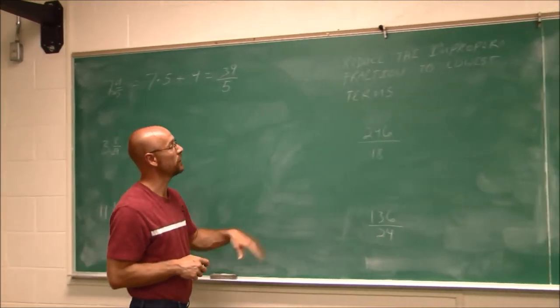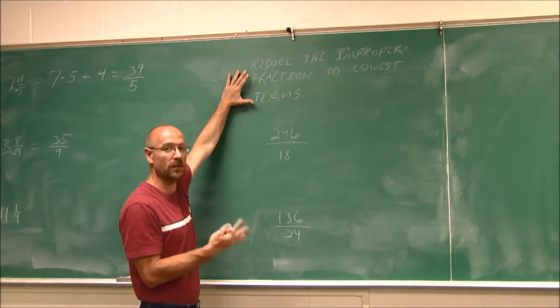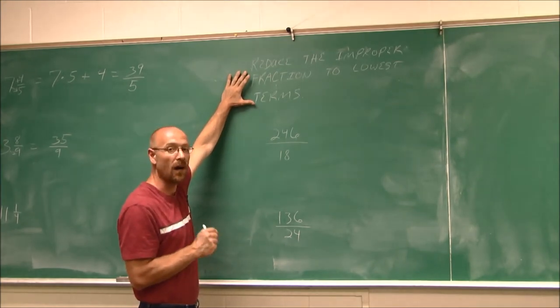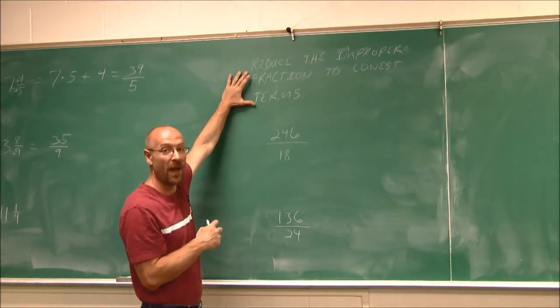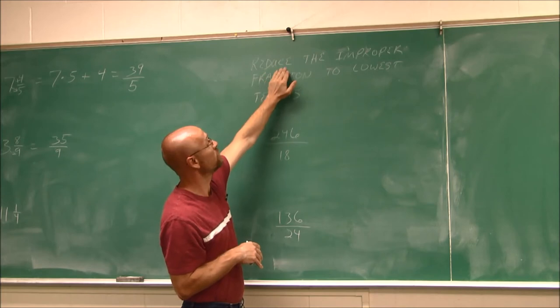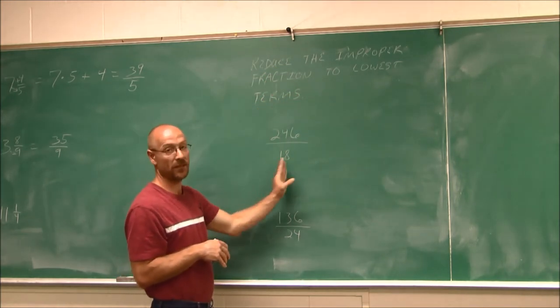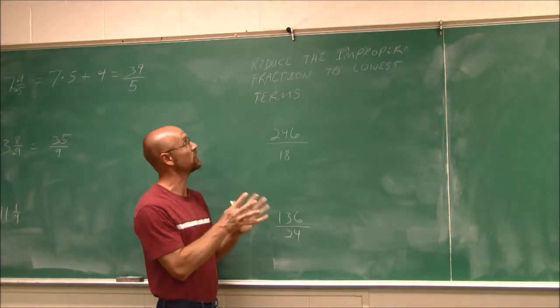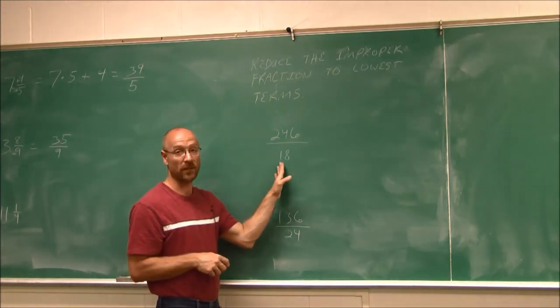All right, let's look at this example here. And this is where it's very important, especially when taking a quiz or a test in any class, is to always read the directions. Because we don't want to go down a path that isn't called for. This asks us to reduce the improper fraction to lowest terms. It doesn't say anything about writing it as a mixed number. It just says, reduce the improper fraction.